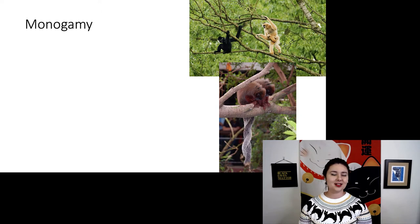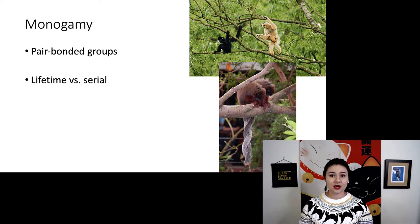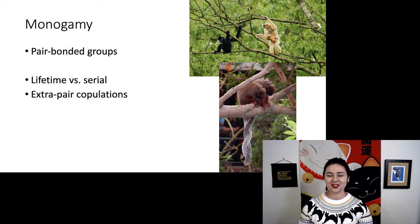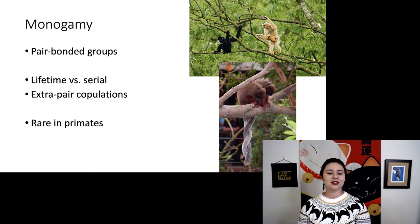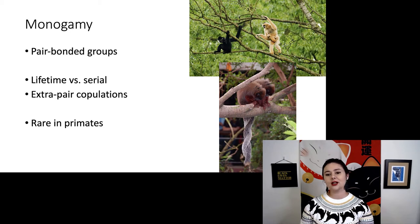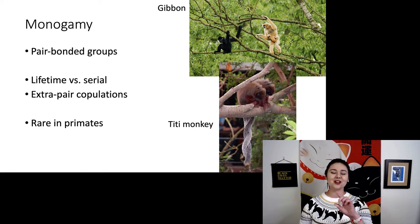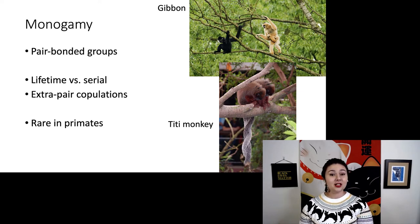First, we have monogamy — the classic one male, one female — and we have pair-bonded groups. You can see lifetime monogamy, and also serial monogamy, where you only have one partner at a time but may have different partners at different points in time. There is some evidence of extra-pair copulations, but overall this is a rare system in primates. Some people argue that gibbons are monogamous, but other researchers argue they are not actually good examples. The best example of monogamy in primates is titi monkeys. Titi monkeys are New World monkeys, and they twine their tails with their partner to show affection. In experiments, they show signs of distress when bonded pairs are separated.